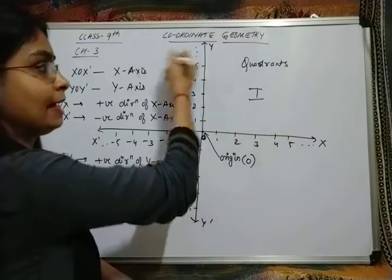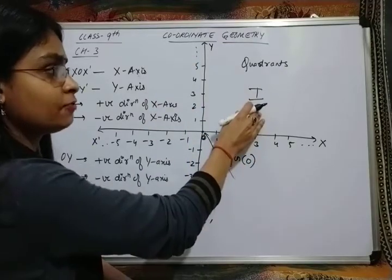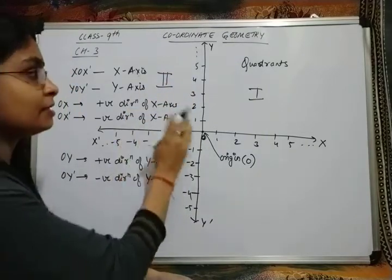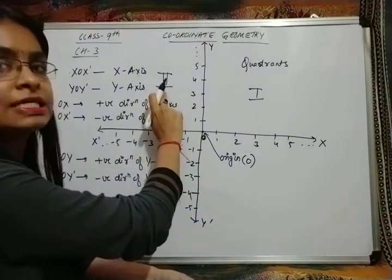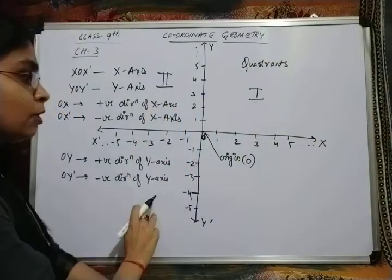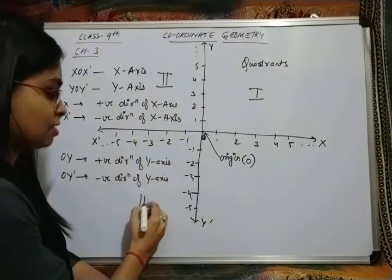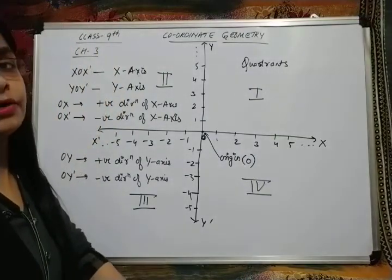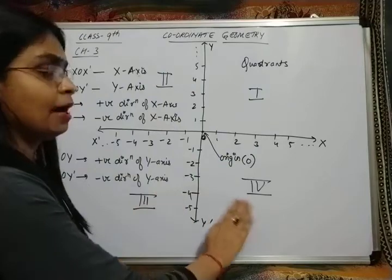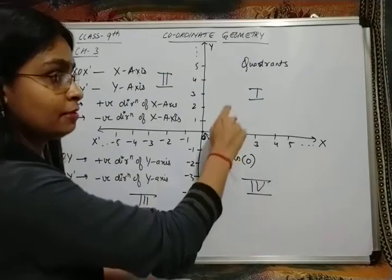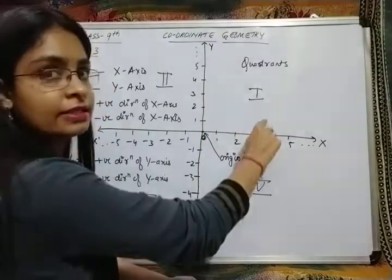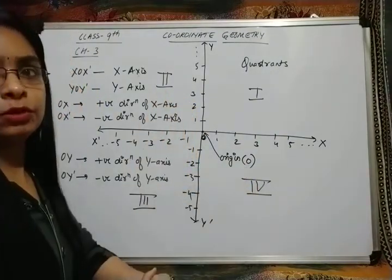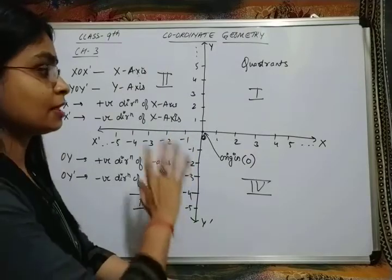We move anti-clockwise. So if this is the first, the next one going anti-clockwise is the second quadrant — which has the negative direction of x-axis and positive direction of y-axis. Then the third quadrant, which has the negative direction of both axes. And the fourth quadrant. So: first, second, third, and fourth quadrant, numbered anti-clockwise starting from the top-right.